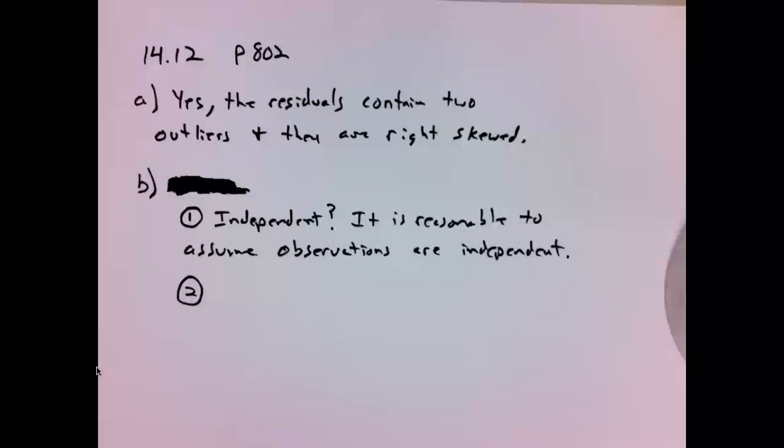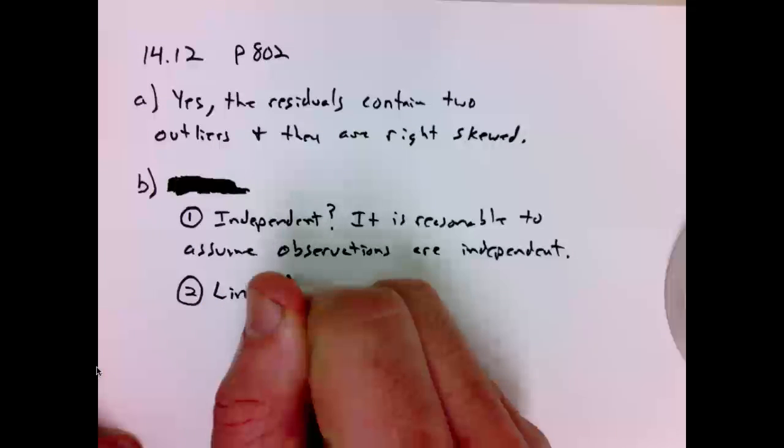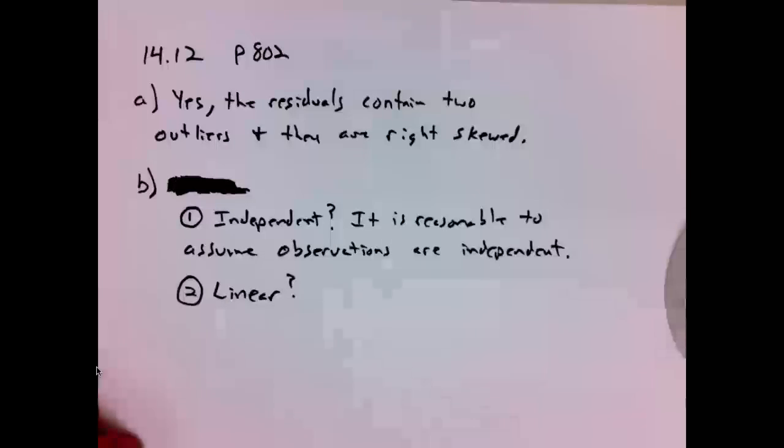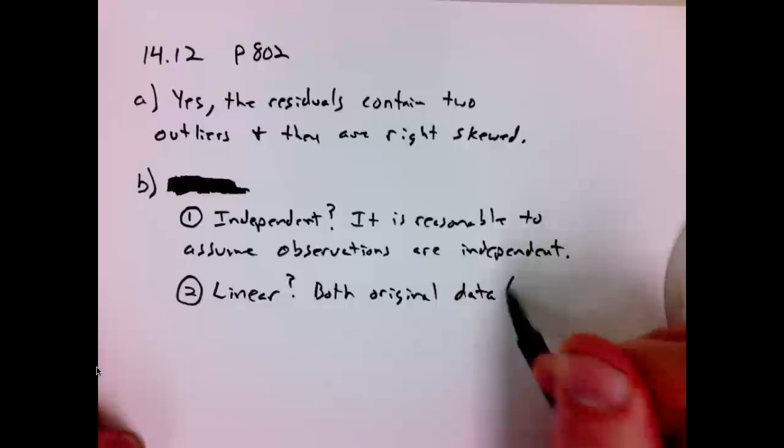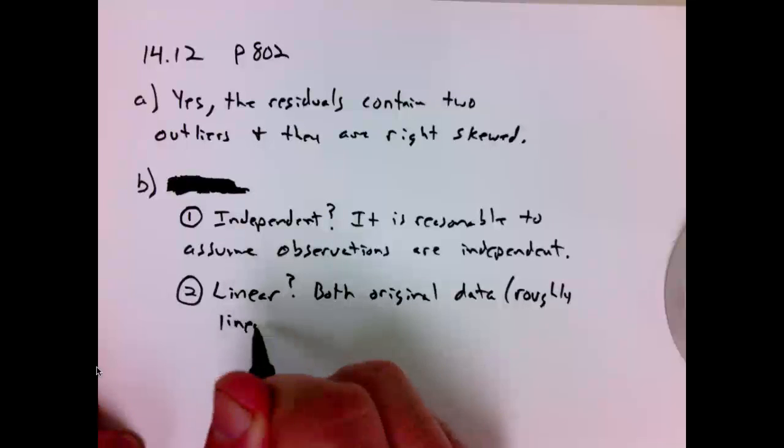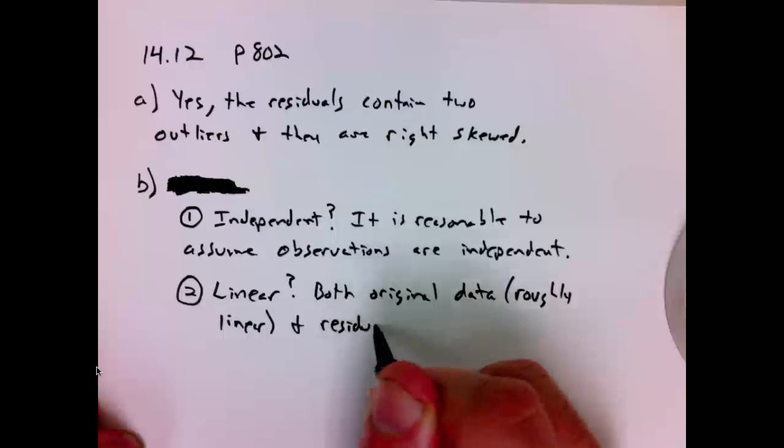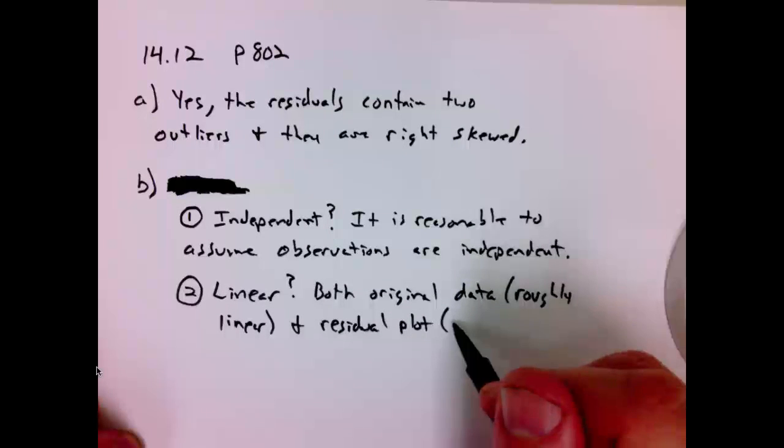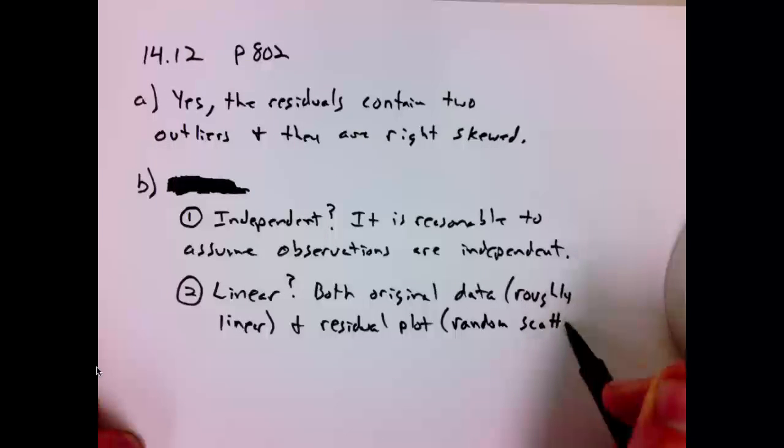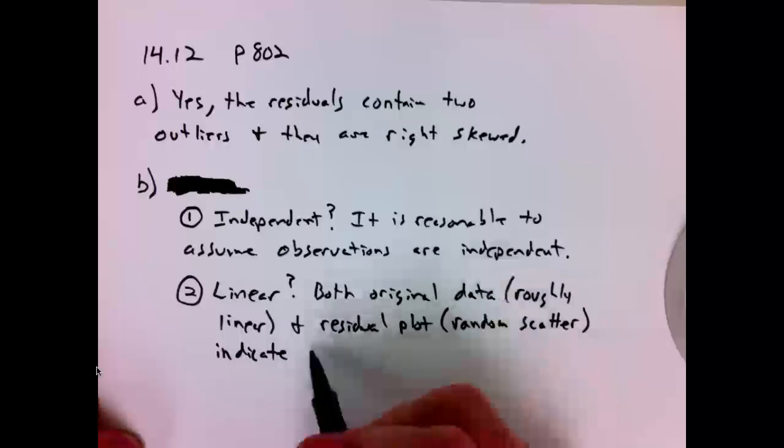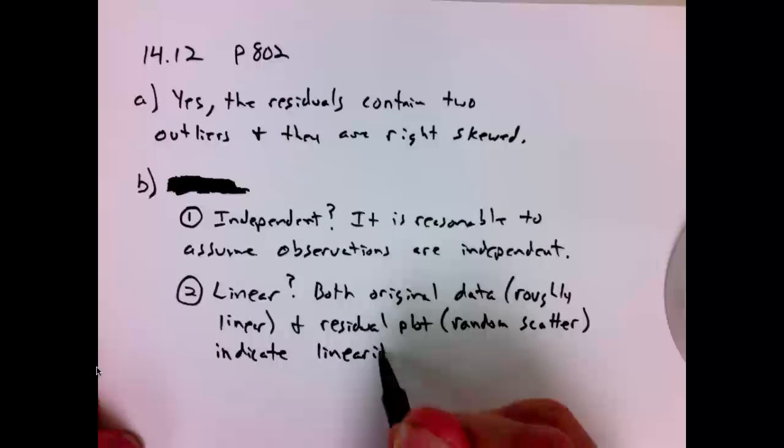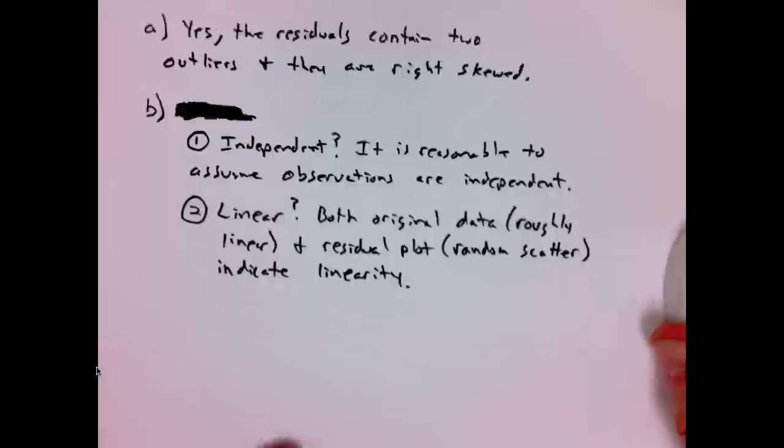Number two. Linear. Well, we looked at the initial data and it appeared to have a linear form. And also, looking at the residual plots, it seemed like the scatter was fairly random about the y equals zero line. So both original data, the original data was roughly linear, and residual plot, the residual plot showed random scatter about the zero line. So the linear line indicate linearity. Okay.